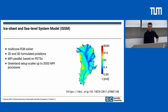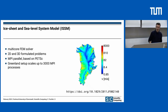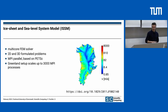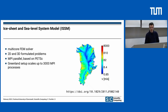Another recap slide about ISSM, which Daniel has talked about. I would like to summarize that we have a multi-core finite element solver which uses 2D and 3D formulated problems. The fact that ISSM problems are already simulated in 2D and 3D is very useful because we can use the 2D view of ISSM for our coupling. ISSM is MPI parallel based on PETSc and scales up to 3000 MPI processes running the Greenland setup.